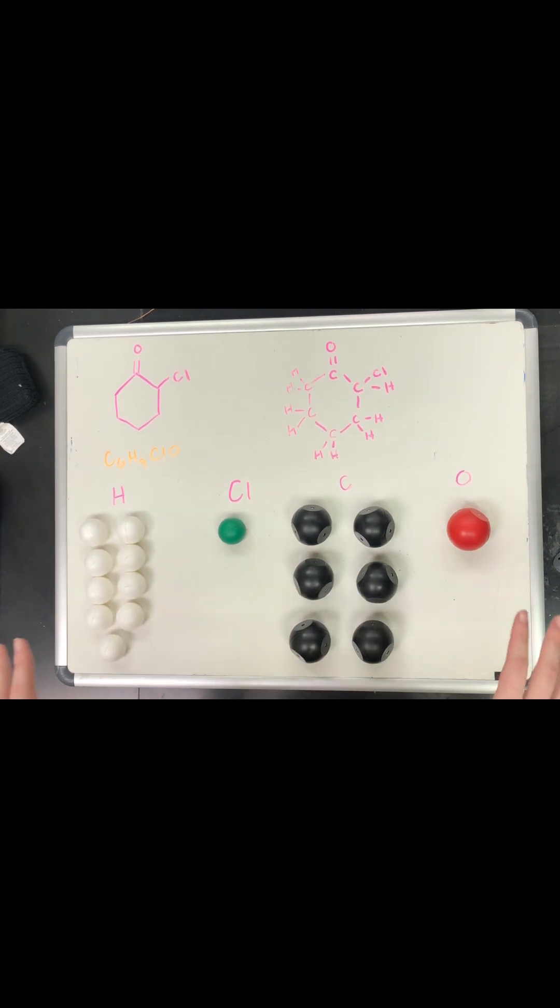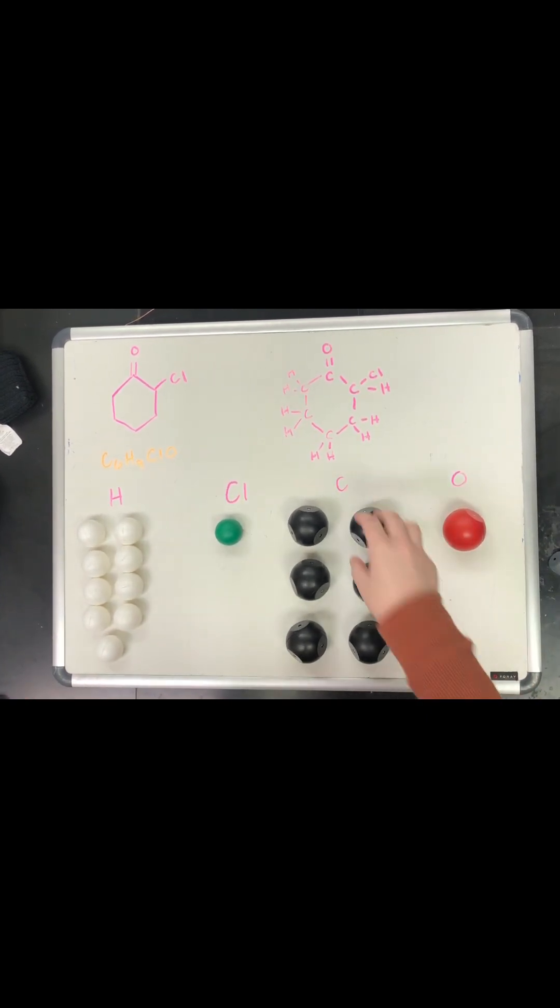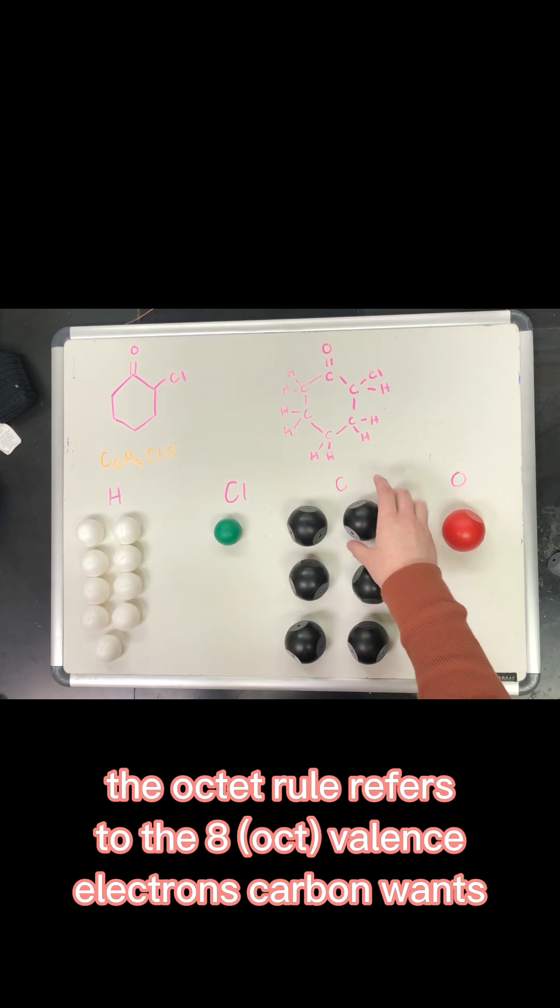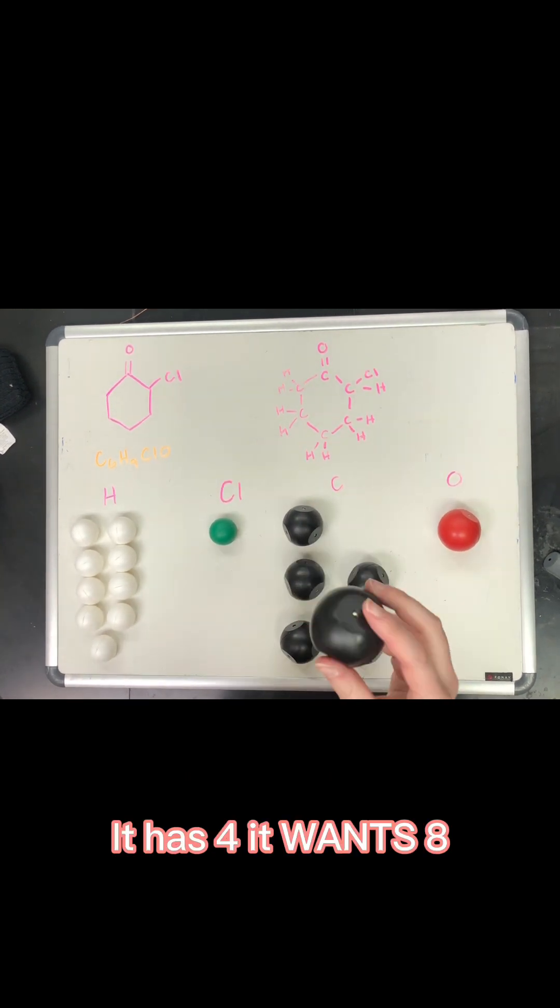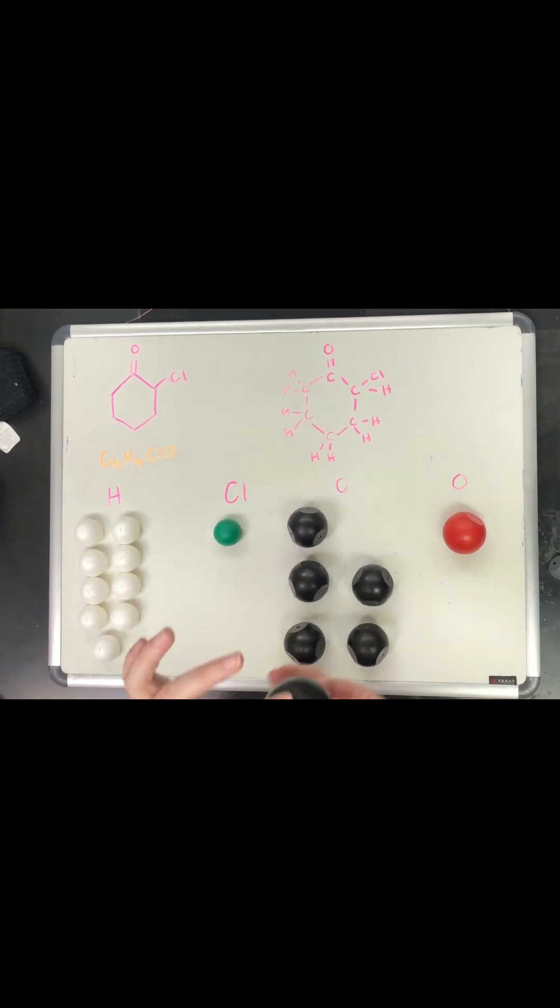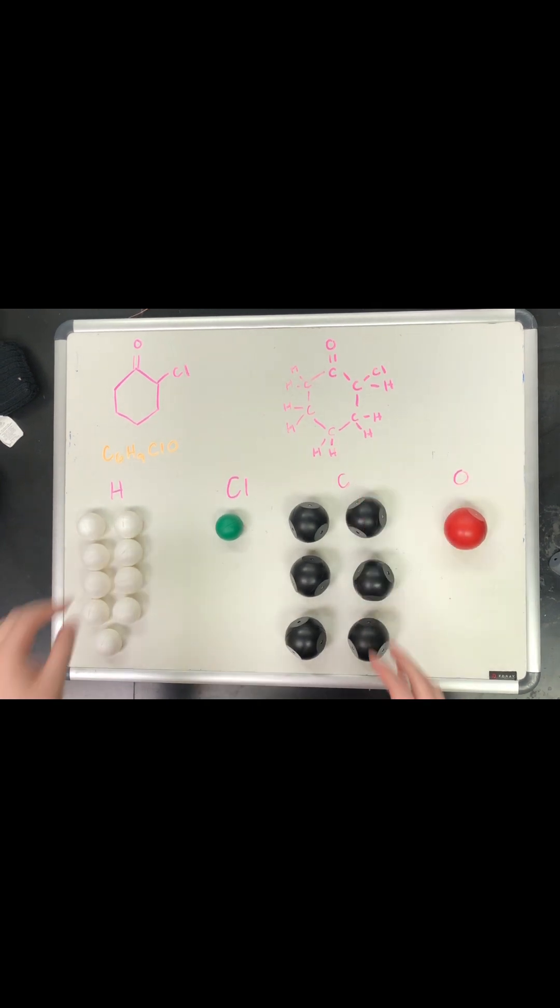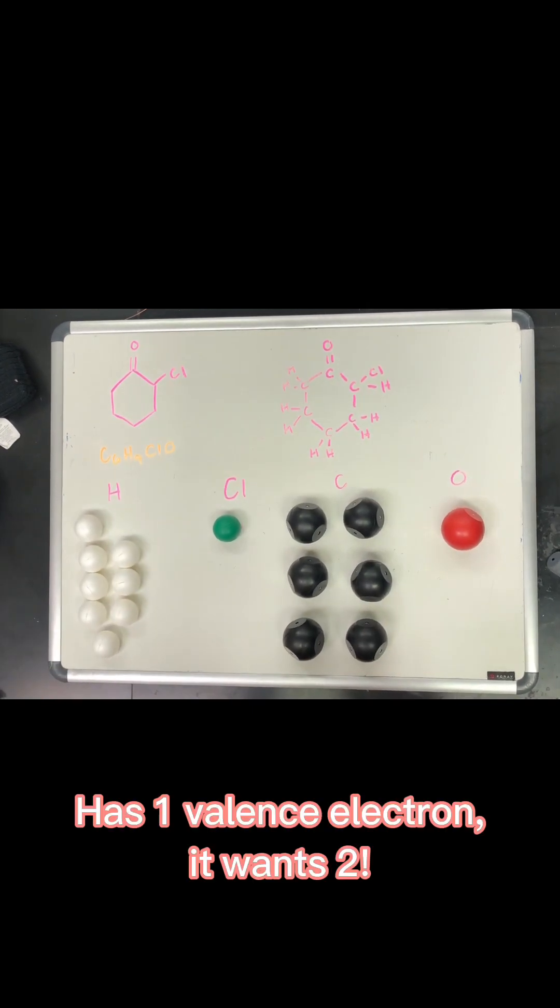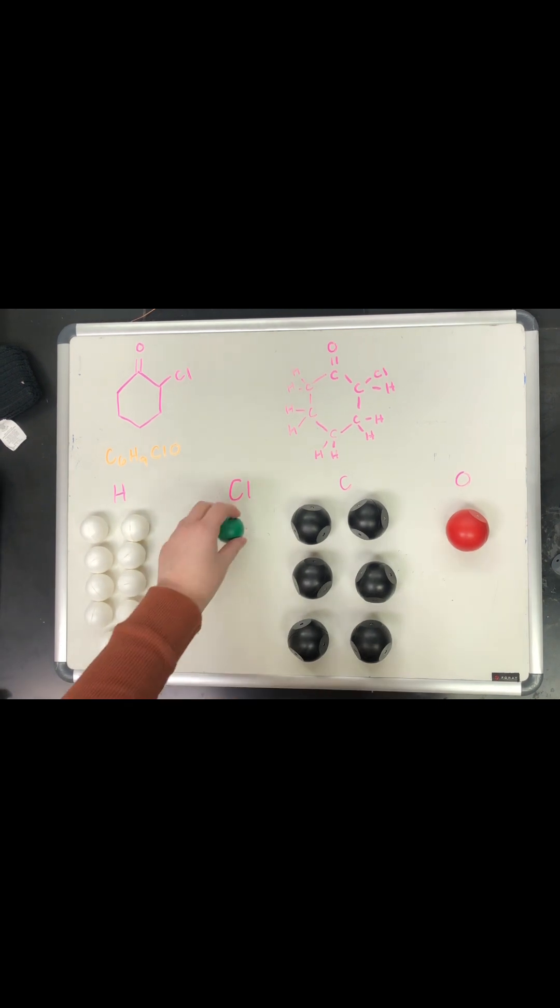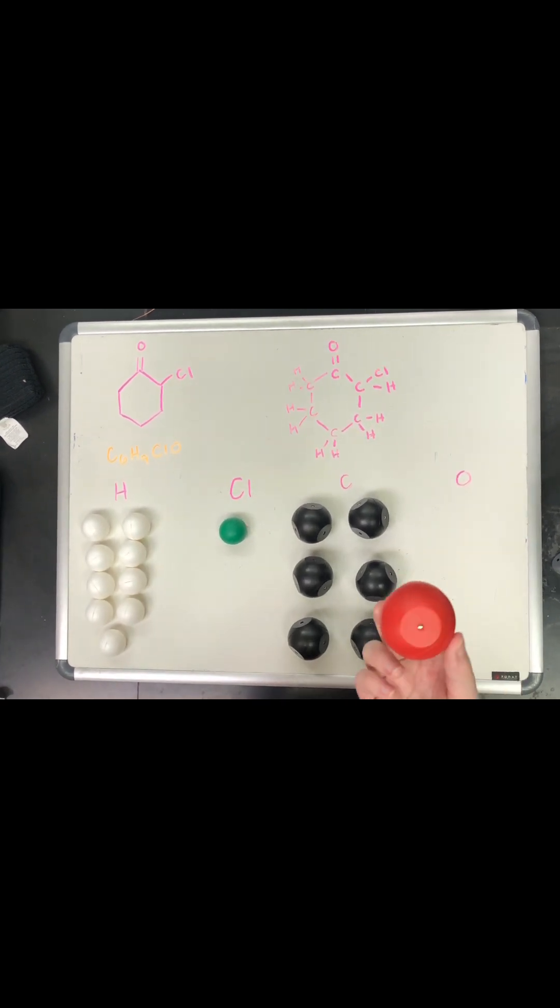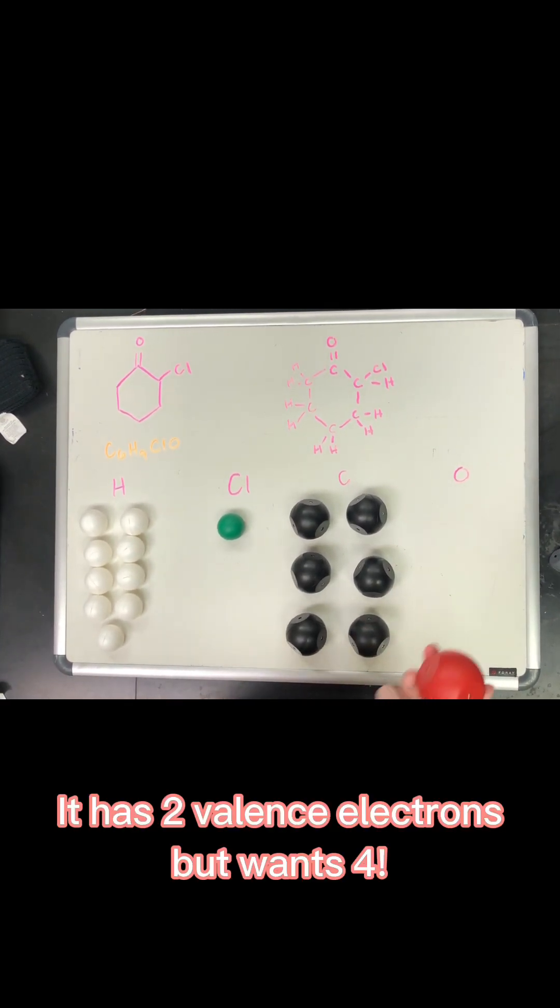Each of these atoms has a certain amount of bonds that they need to make in order to fill the octet rule, which is for the carbon. The carbon has eight valence electrons, so there's four spots that it needs to fill with a bond. Hydrogen only has two electrons, so it needs to make one bond. Chlorine is the same, it needs to make one bond. Oxygen needs to make two, because it has four valence electrons.